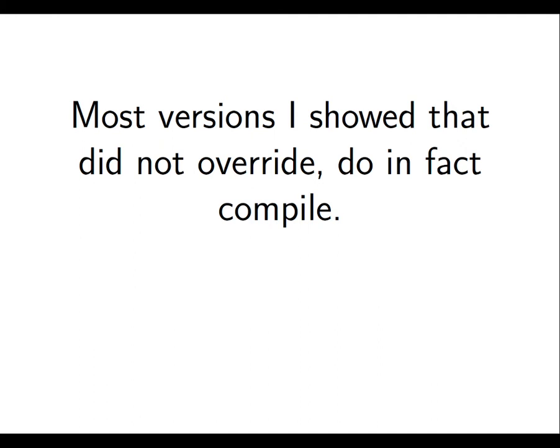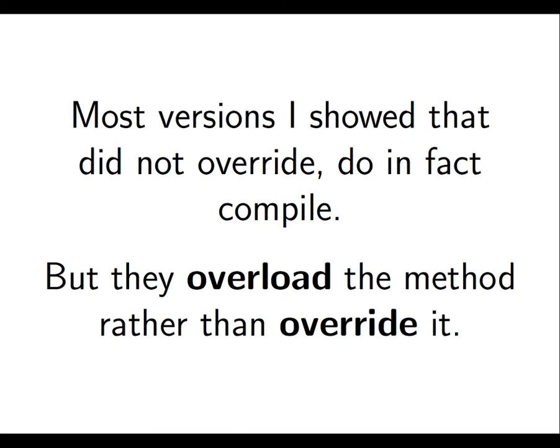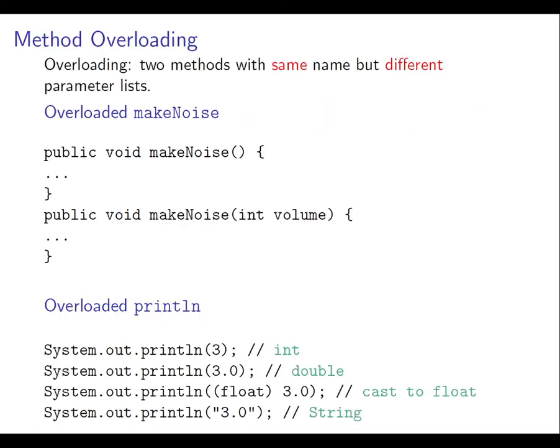However, most of the versions that were not overriding that you just saw do in fact compile. It's just that they're not overriding, they are overloading. This can get really confusing because it will mean that both versions of the method are around, and which one you get will depend on the specific arguments or the specific contexts in which they're used.